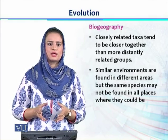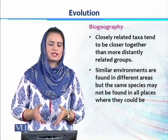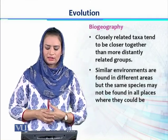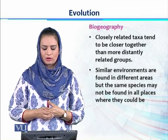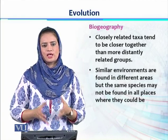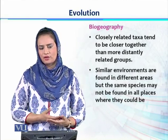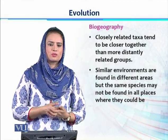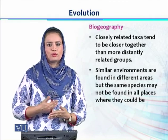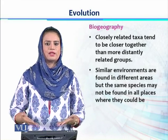Populations which are more distantly separated may share similar environments, but the same species may not be found in all places where a similar habitat exists. Even if similar physical and environmental conditions are present in another geographical region, it is not compulsory that the species found in geographical region A will also be found in a similar habitat in geographical region B. So both regions, although having similar physical and environmental conditions, can have different types of species.